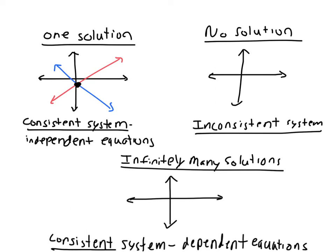Another option is that you're going to have no solution. And graphically, what that would mean is you would have two parallel lines. So they would never intersect. So that would be no solution. If you have at least one solution, you're called a consistent system. And then if there's no solution, it's an inconsistent system.